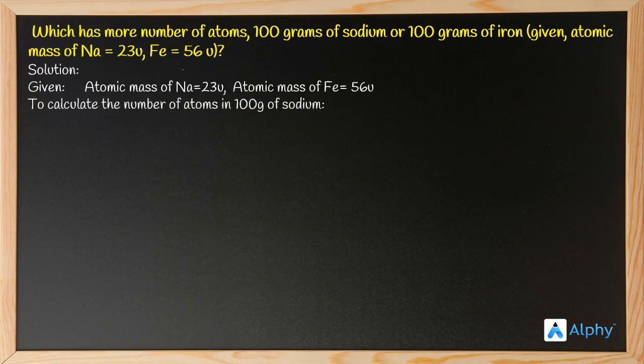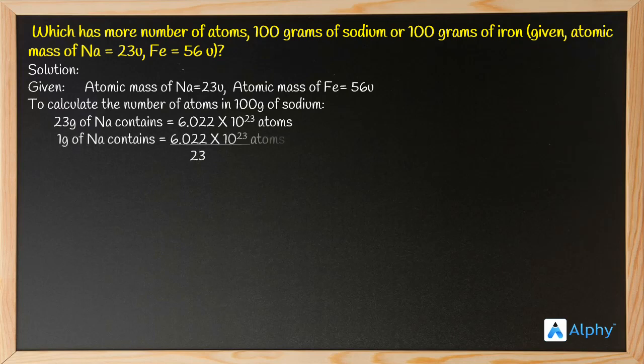To calculate the number of atoms in 100 grams of sodium: 23 grams of sodium contains 6.022 × 10²³ atoms, where 23 is the atomic mass of sodium. So 1 gram of sodium contains 6.022 × 10²³ divided by 23 atoms.